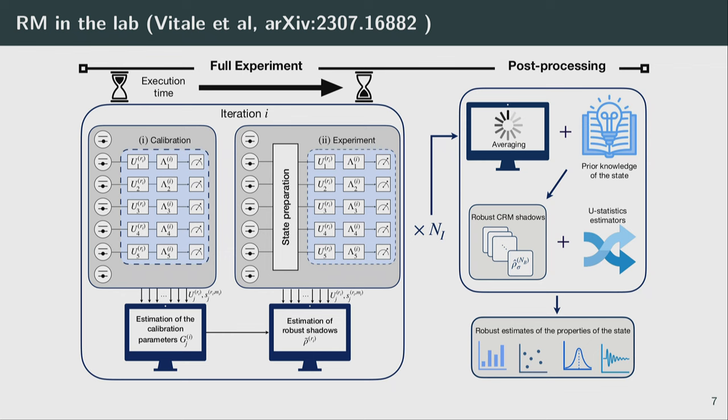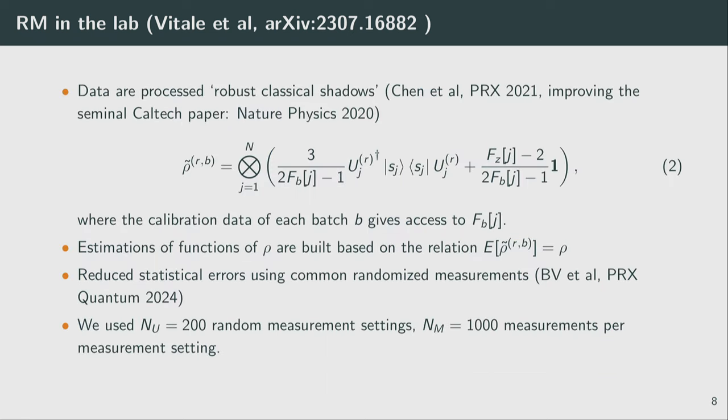In the second step, one performs the actual measurement on the quantum state of interest. We construct classical shadows, a form of randomized measurement. The experimental step of data acquisition is over. You can store these results and go to a post-processing stage. The post-processing stage has many ways. I will focus on one. You load the data on the classical computer, and then you estimate entanglement entropies or other things with a formula. It's really simple.